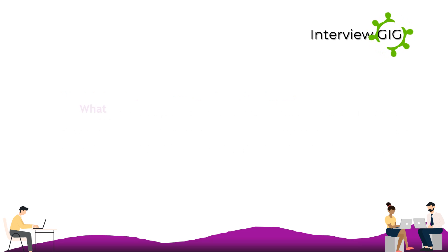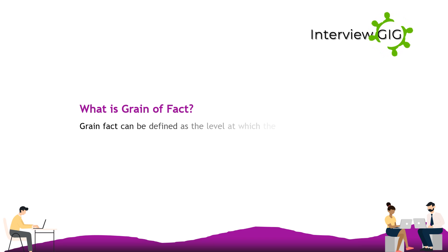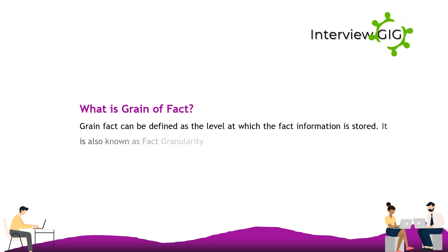The grain of fact can be defined as the level at which the fact information is stored. It is also known as fact granularity.